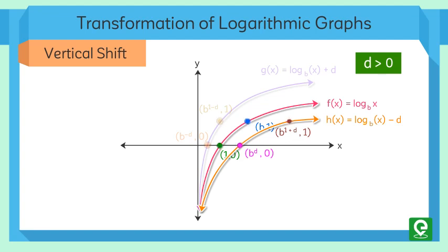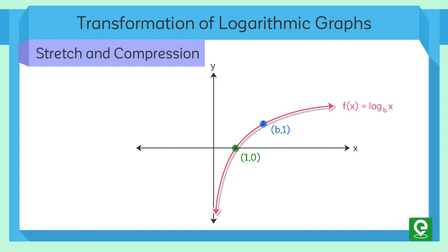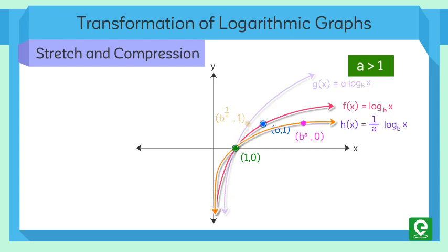Third transformation: stretch and compression. When the parent function is multiplied by a constant, the result is a vertical stretch or compression of the original graph. When a constant a > 1 is multiplied to the parent function, the transformation is a vertical stretch. Similarly, when divided by the same constant, the transformation is a vertical compression.